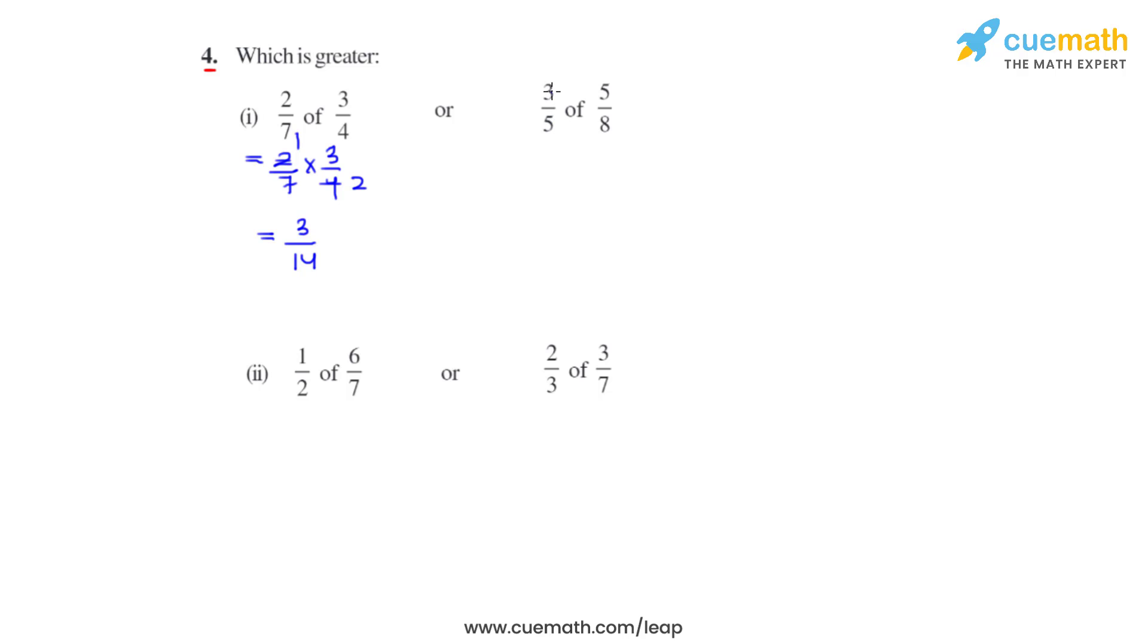Coming to the other part, we have 3 over 5 of 5 over 8, replacing 'of' with a multiplication sign. We can cancel out 5 and 5, and we get the product as 3 over 8.